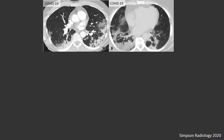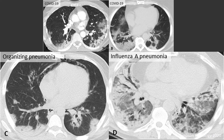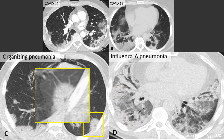It's important to emphasize that these features are not pathognomonic for COVID-19. Here's a case of organizing pneumonia related to dermatomyositis on the left and influenza A pneumonia on the right. Both processes demonstrate peripheral opacities of consolidation and ground glass, with the organizing pneumonia opacity appearing rounded. These imaging features overlap with COVID-19.